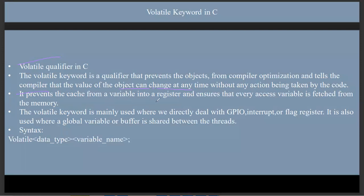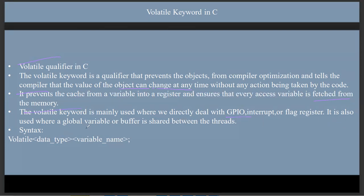It prevents the cache from storing the variable into a register and ensures that every access of the variable is fetched from the memory. It is not directly taking the values from the register or shared variable — it is directly taking the values from the main memory. The volatile keyword is used where we directly deal with GPIO, interrupts, flag registers, and also where a global variable or buffer is shared between threads.